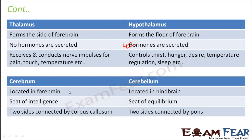Cerebrum and cerebellum. Cerebrum is a part of the forebrain, while cerebellum is a part of the hindbrain. Cerebrum is the seat of intelligence and cerebellum is the seat of equilibrium. Cerebellum maintains balance, whereas cerebrum is where memory, intelligence, and thought processes reside.